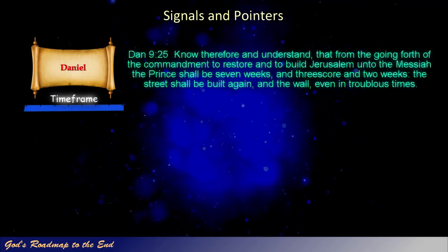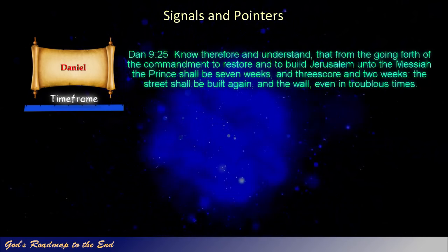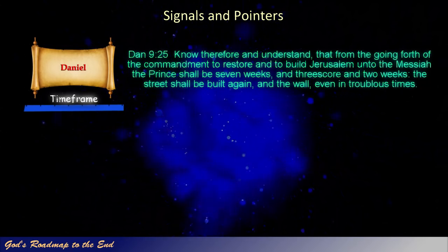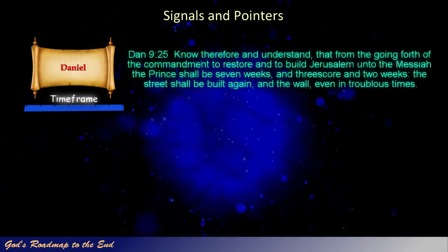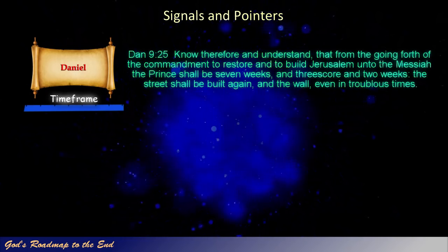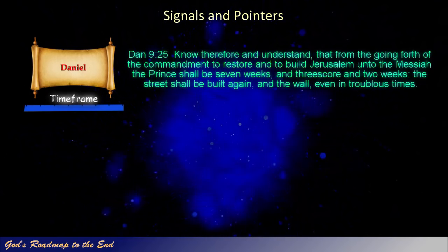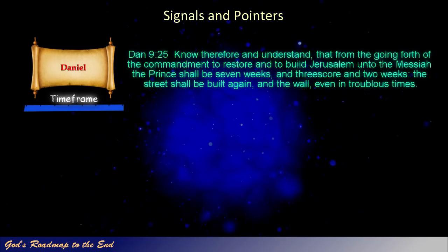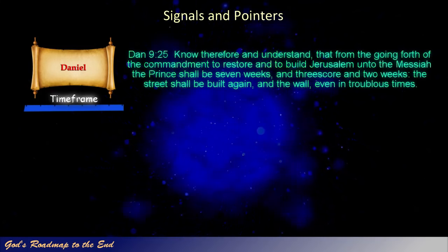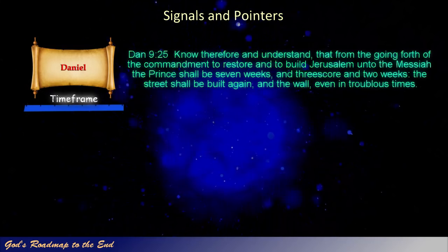Daniel 9 verse 25: 'Know therefore and understand, that from the going forth of the commandment to restore and to build Jerusalem unto the Messiah the Prince shall be seven weeks, and threescore and two weeks: the street shall be built again, and the wall, even in troublous times.' Sixty-nine weeks of years, or 483 years after the decree was given to rebuild Jerusalem by Artaxerxes, Jesus rode into Jerusalem on a donkey.